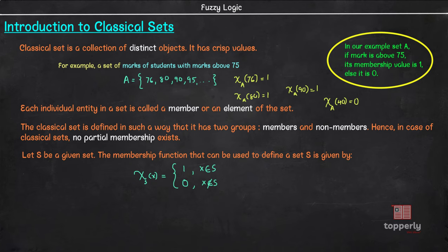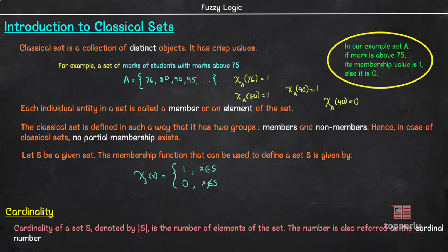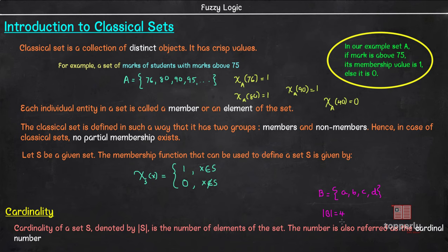Another important concept is cardinality. Cardinality of a set is the number of elements of the set and this number is also referred to as the cardinal number. For example, suppose you have a set B with elements A, B, C, and D. Then the cardinality of set B is 4, because there are 4 elements in the set. The total number of elements of a set constitutes its cardinality, and in this example the cardinal number is 4.